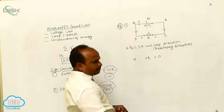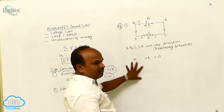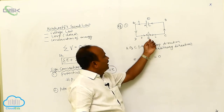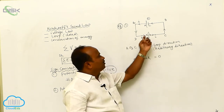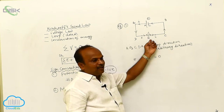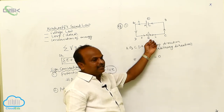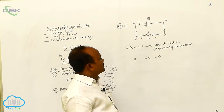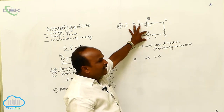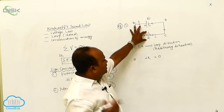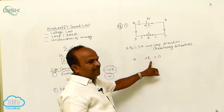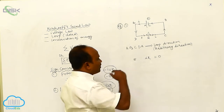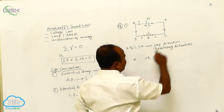In the closed circuit there is only one cell with EMF equal to E and only one resistance. Across that resistance, the current passing through is I. The product of current and resistance is I times R. Before applying the sign convention, the arbitrary direction A, B, C, D, A is very important.